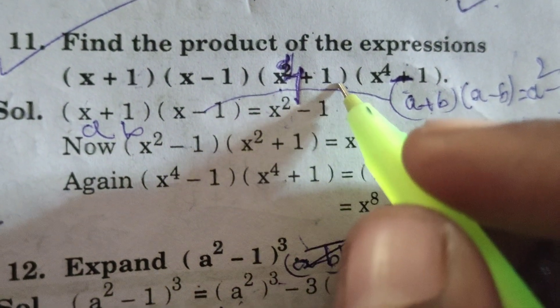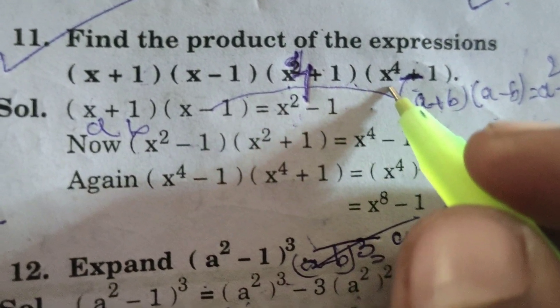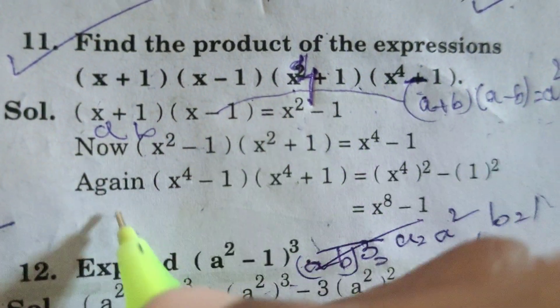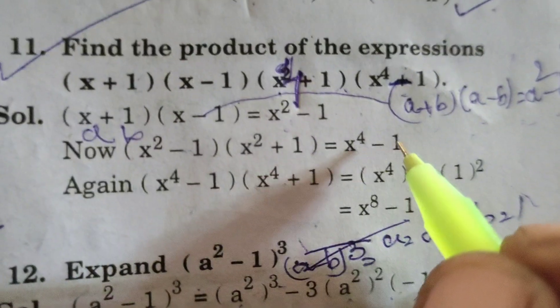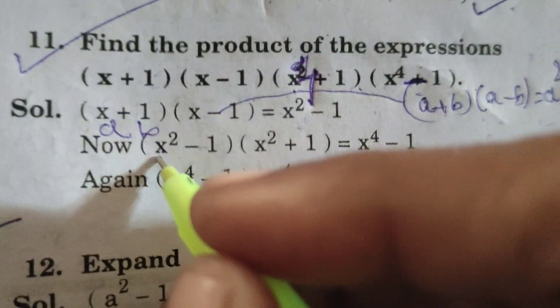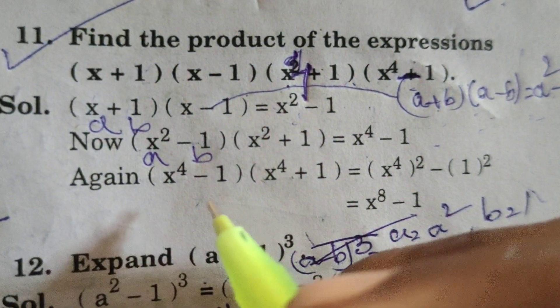Next step, x power 4 plus 1 into x power 4 minus 1. First of all here, x square minus 1 into x square plus 1. Using this formula, write x power 4 minus 1. This is a, this is b.